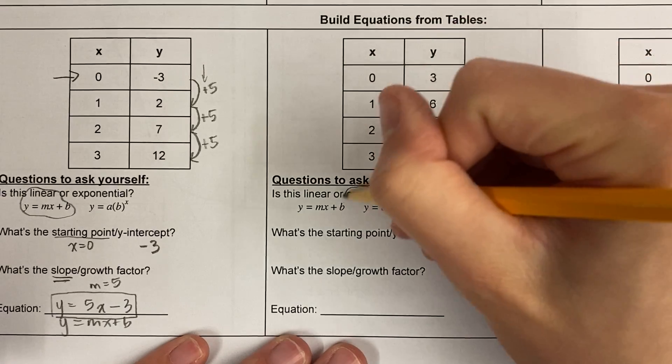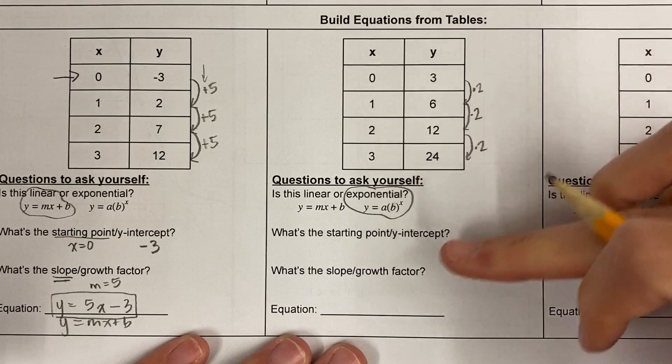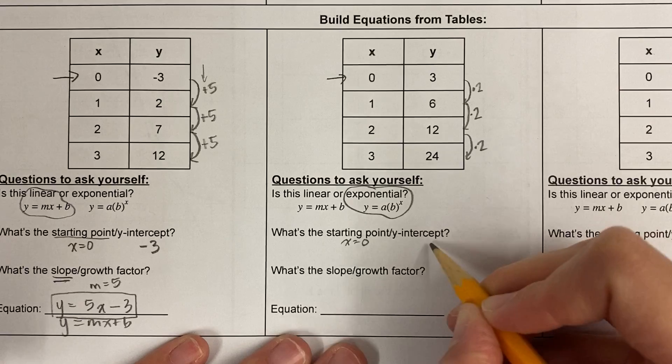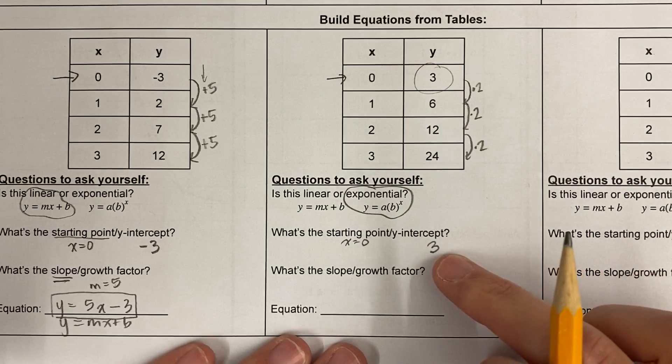Now this is exponential because I'm multiplying. What's the starting point? The starting point is where x equals 0. So the starting point is 3, right? This is 3. That's my starting point.